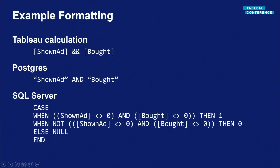Here's another super simple example that's not so straightforward. I have a Tableau calculation: was someone shown an ad and did they purchase the item? In Postgres, which supports Boolean types as a first-class type, that's a very simple translation to 'shown_ad AND bought.' But in SQL Server, at least until recently, they didn't support Boolean types, so we have to emulate Booleans with integers. It's not as straightforward as you might think because we need to worry about null semantics — if either 'shown_ad' or 'bought' are null, then the output should be null.